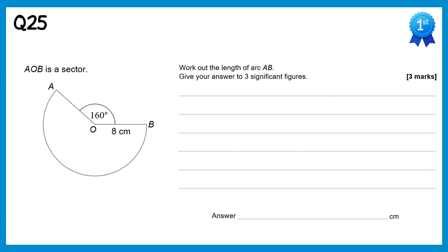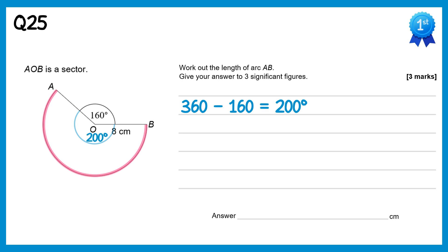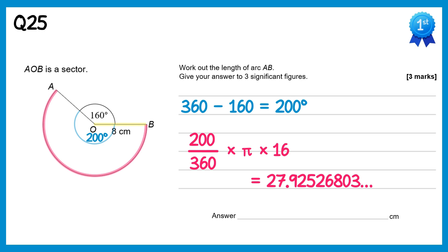For this sector question we need to find the arc length AB. The marked angle is 160°, so the sector angle = 360 − 160 = 200°. Using the arc length formula: (200/360) × π × diameter. The radius is 8cm so the diameter is 16cm. Calculating: (200/360) × π × 16 ≈ 27.9cm (to three significant figures).